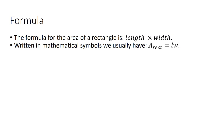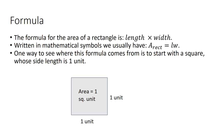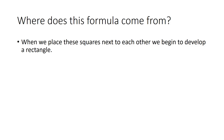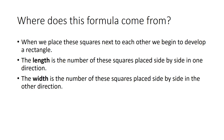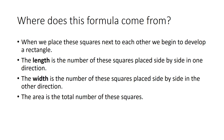One way to see where this formula comes from is to start with a square whose side length is one unit. Its area is one square unit. When we place these unit squares next to each other, we begin to develop a rectangle. The length is the number of squares placed side by side in one direction, and the width is the number placed in the other direction.